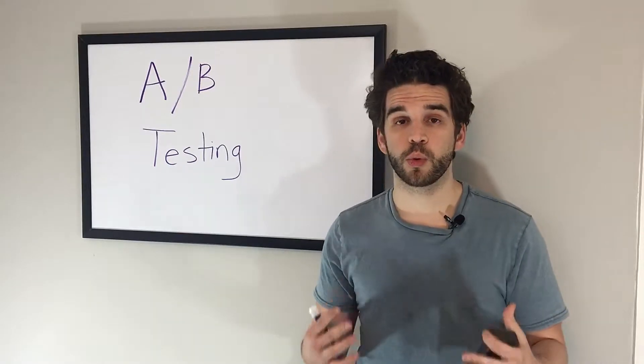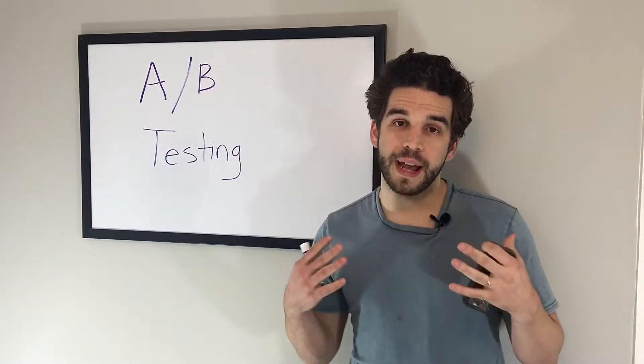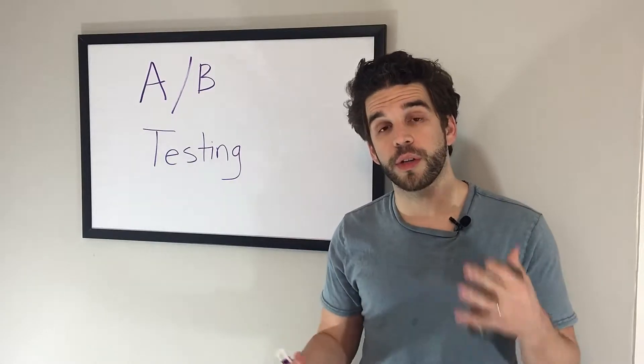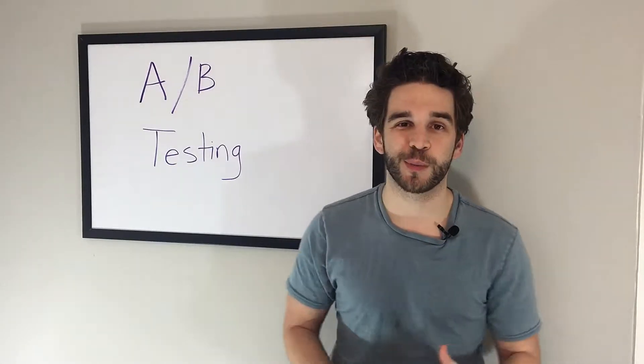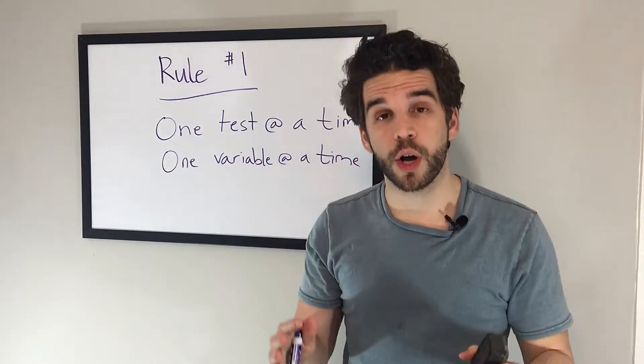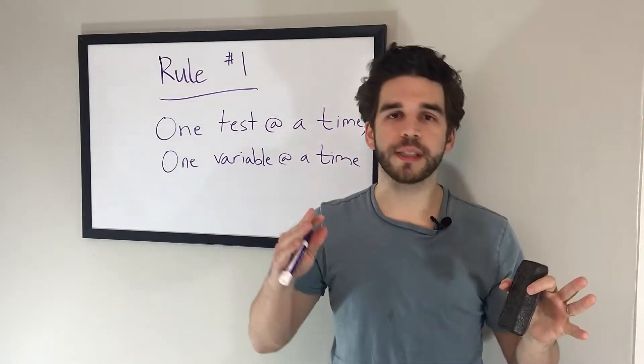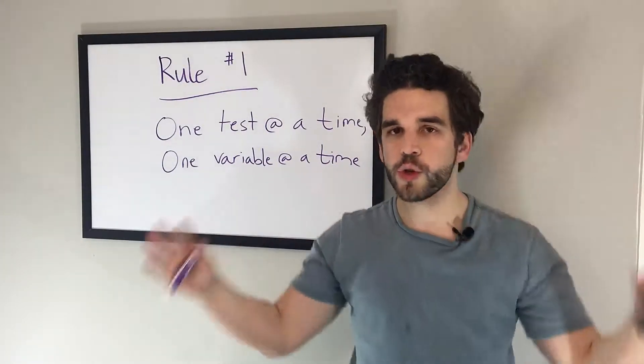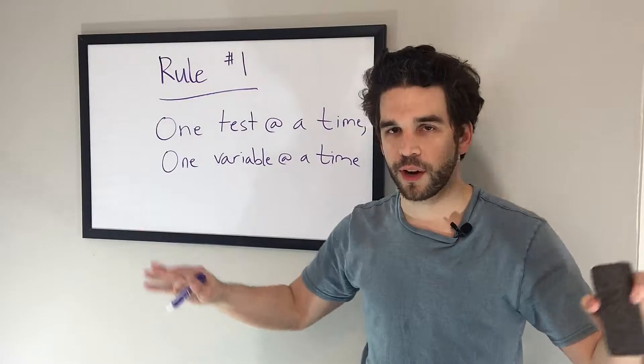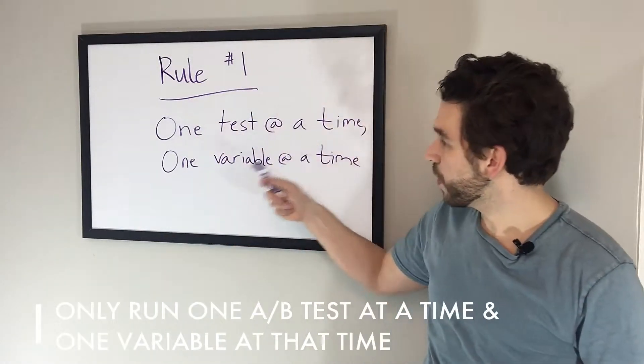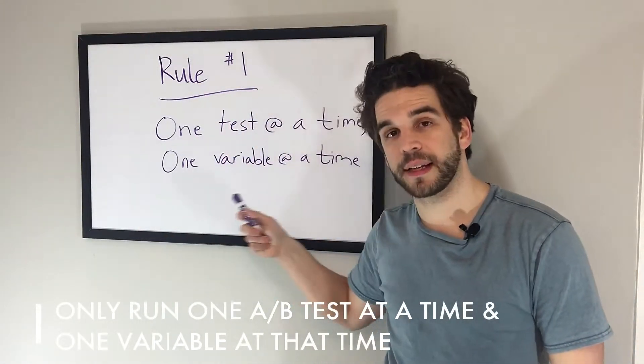And then I'm going to give you an order you can start testing. So let's jump into rule number one. Rule number one of A/B testing. This is your golden rule. This is your do unto others rule. Only run one test at a time, one variable at a time.